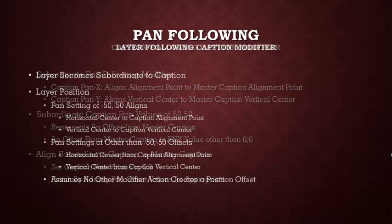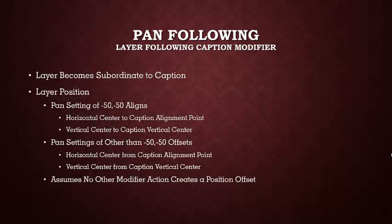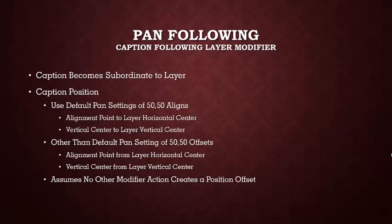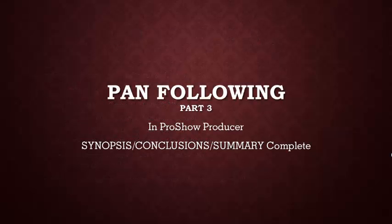When you have a layer following a caption, the layer becomes subordinate to the caption. The layer position should have a value of minus 50, minus 50, because any other value will represent an offset from the master caption. Finally, when you have a caption following a layer via a modifier, the caption becomes subordinate to the layer. Its default settings of 50-50 will align the alignment point to the layer's horizontal center and the vertical center to the layer's vertical center. Any other value other than 50-50 represents an offset from the layer it is following. That concludes this tutorial on Pan Following Part 3. Thanks for watching.